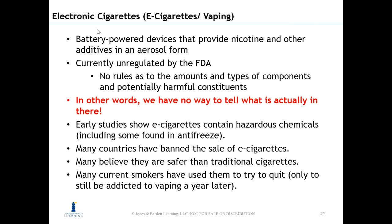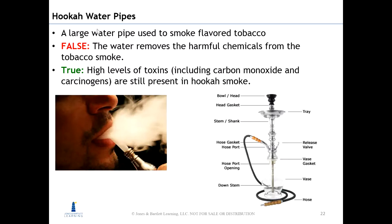Electronic cigarettes are battery-powered devices that provide nicotine and other additives in an aerosol form. These are called e-cigarettes, and using them is called vaping. They are currently unregulated by the FDA, so there are no rules regarding the amounts and types of chemicals in them. Early studies show they contain hazardous chemicals, and some countries have banned their sale. While e-cigarettes have helped some people quit smoking by managing withdrawal symptoms, young people are increasingly adopting them and developing nicotine addiction — essentially creating a whole new generation of addicts with a different product.